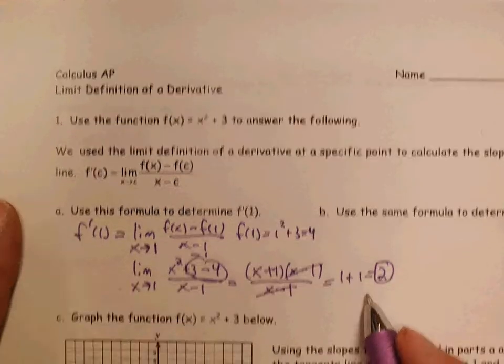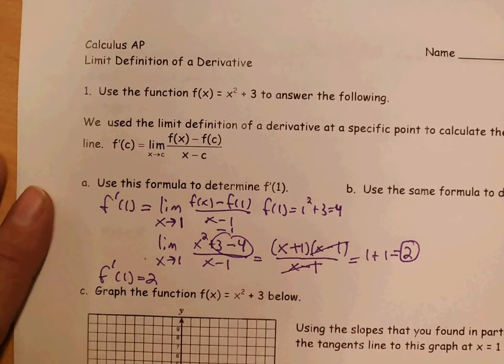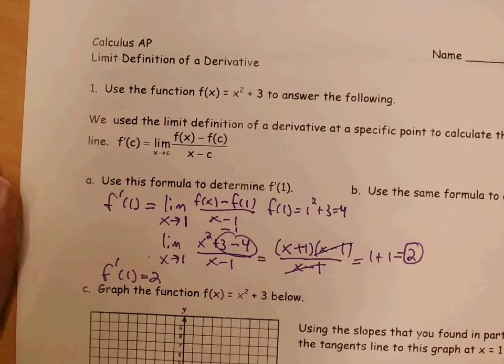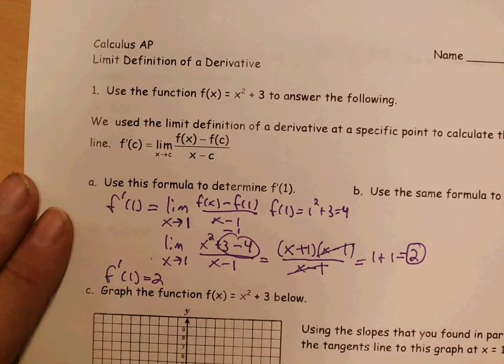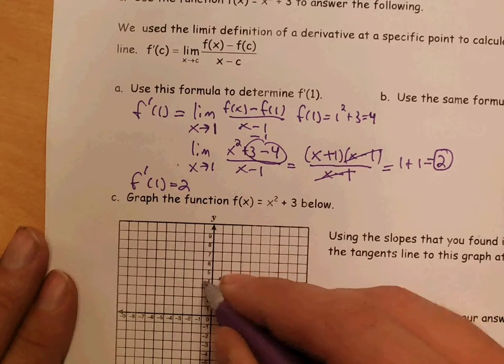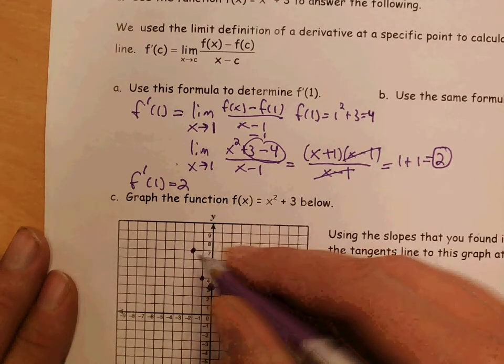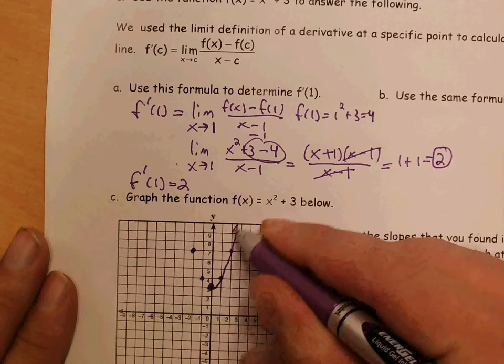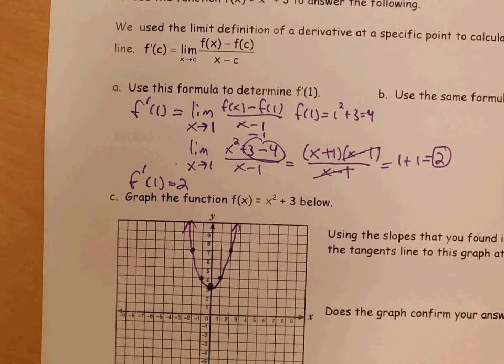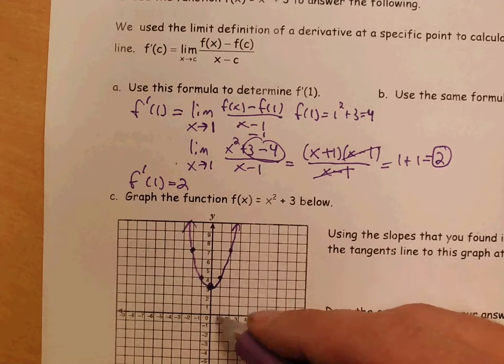I'm going to write my answer in a clear and concise way. f prime of 1 is 2. And what this means is on this graph of y equals x squared plus 3, at x equals 1, the slope of the tangent line is 2. So, we're going to graph y equals x squared plus 3 here. It looks like this. We should know this from algebra 2, algebra 1, a long, long ago. So, here is our graph. And we want to see, at x equals 1, it says f prime equals 2.